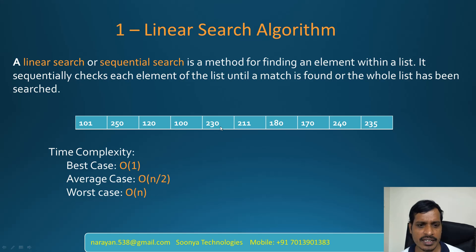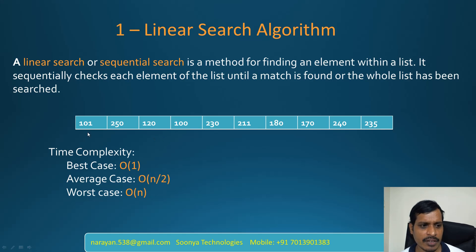So here we are searching one by one sequentially from the first item. This is called linear search or sequential search algorithm. Now we will discuss time complexity.